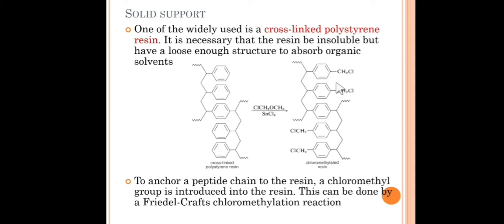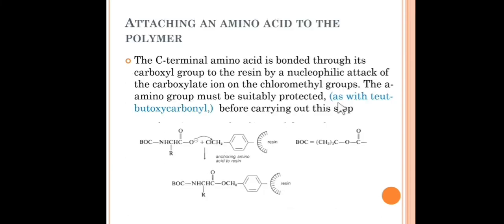Now we have this reactive group for anchoring the C-terminal amino acids. The C-terminal amino acid is bonded through its carboxyl group to this resin by nucleophilic attack of the carboxylate ion on the chloromethyl groups. The alpha-amino group must be suitably protected, as with tert-butoxycarbonyl. This is how the appropriately protected amino acid, BOC in this case, this BOC-protected amino acid is reacted with or anchored with the resin.